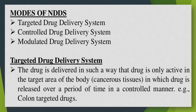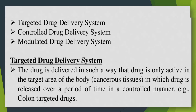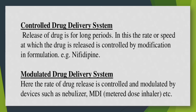In a targeted drug delivery system, the drug is delivered in such a way that it is only active in the target area of the body — for example, cancerous tissue — where the drug is released over a period of time in a controlled manner. An example is colon-targeted drug delivery. In a controlled drug delivery system, drug release occurs over long periods, and the rate at which the drug is released is controlled by modification in formulation.